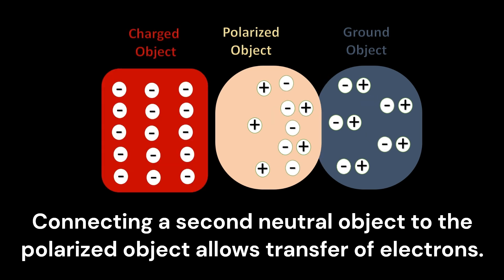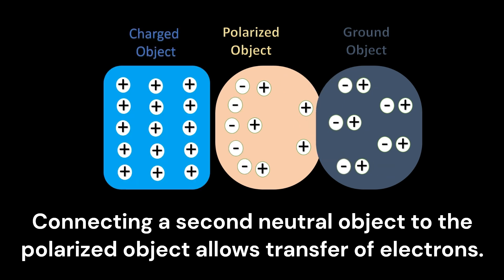Conversely, if the charged object in the first phase is negative, electrons from the polarized object will be pushed further to the ground object, making the polarized object lose electrons and have a positive charge.